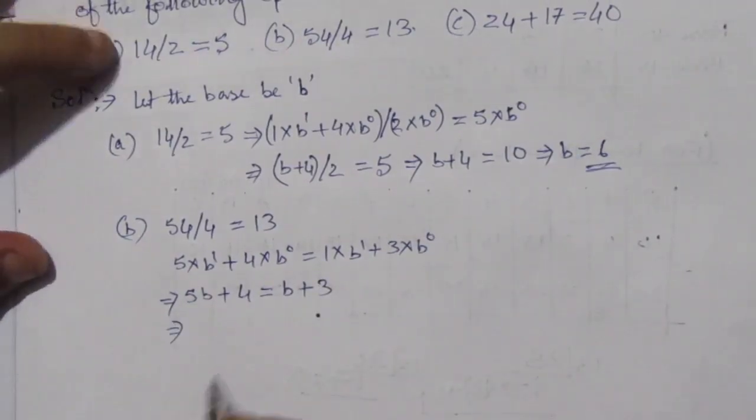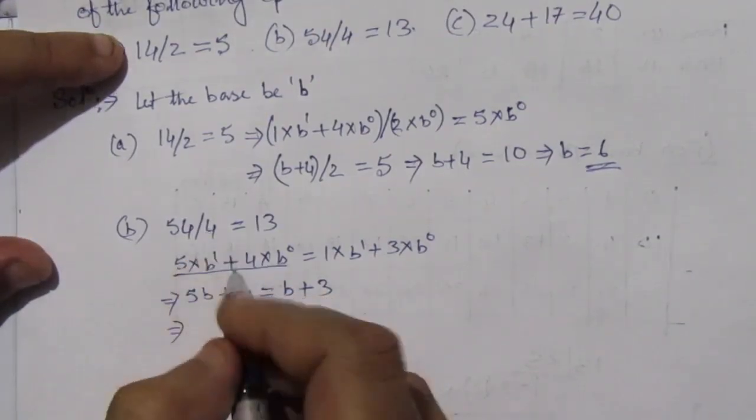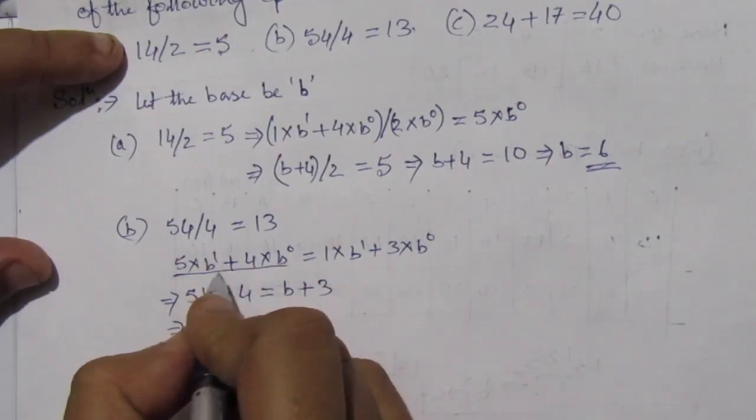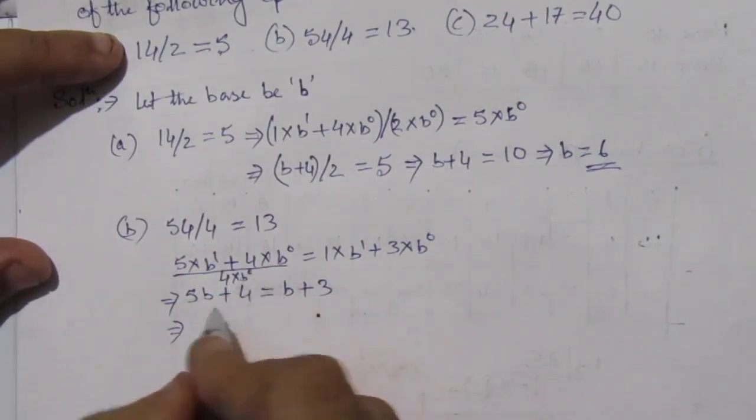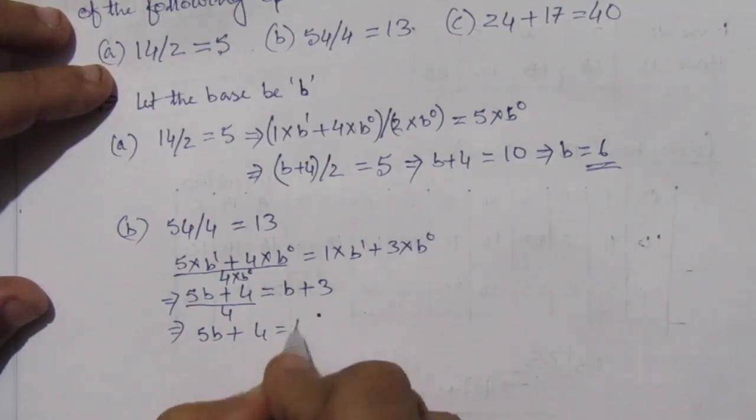Okay, I made a mistake here. This divided by 4, again divided by 4. This 4 is 4 × b^0. So we'll get 5b + 4 equal to 4b + 12.